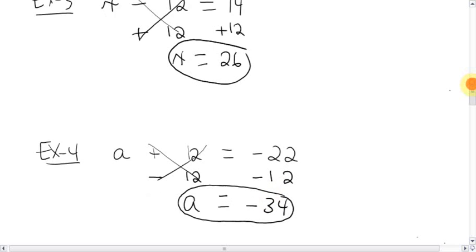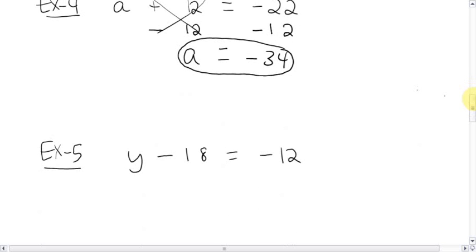How about this one here? y minus 18 equals negative 12. Same thing. y is being subtracted by 18. You want to get the y by itself. How do we do that? Get rid of the 18 by adding 18. The opposite of what it's doing to the letter. Do the same to the other side. Add 18. This becomes 0. We slash it out. We're left with y. Let's line up the equal sign. Then we do the math on this side. Negative 12 plus 18. You're down 12. You're up 18. You're up 6. y equals 6.